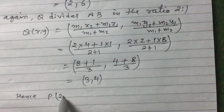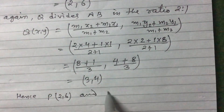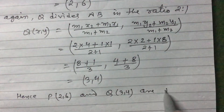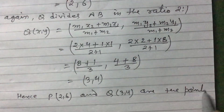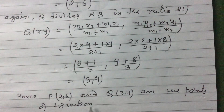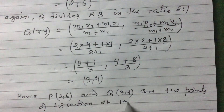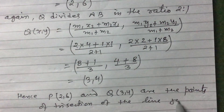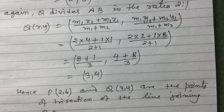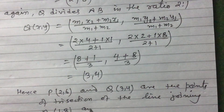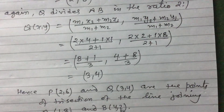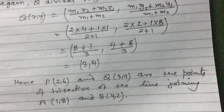Therefore P(2, 6) and Q(3, 4) are the points of trisection of the line joining A(1, 8) and B(4, 2).